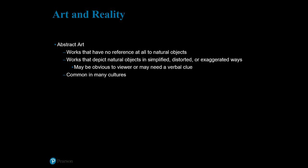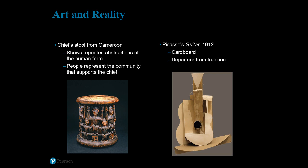Now, what about abstract art? In the art world, abstract has two definitions: a work with no reference to objective reality, or a work that depicts reality in a simplified, distorted, or exaggerated way. Your book defines abstract art as the latter. Abstract artists may alter the appearance of an object in the spirit of experimentation or to emphasize certain aspects of their subject. Sometimes the subject will be obvious and other times a further explanation will be required — sometimes a clue is necessary to determine the subject matter.